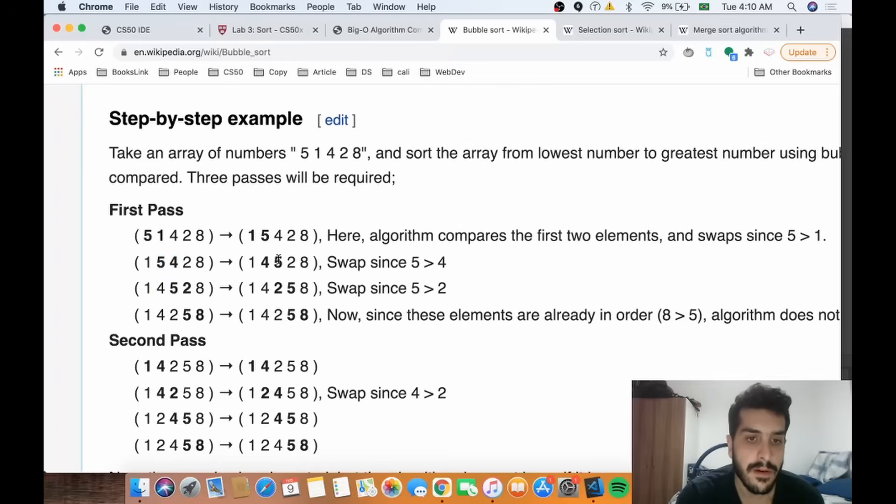5 is greater than 4, so 5 goes to the right. 5 with 2 - 5 goes to the right. Now 5 is not greater than 8, so this stays the same. This is called bubble sort because at the end of each iteration - this will be two for loops - but at the end of the inner for loop, the highest value will be placed at the back of the array. So you're bubbling up the largest value.